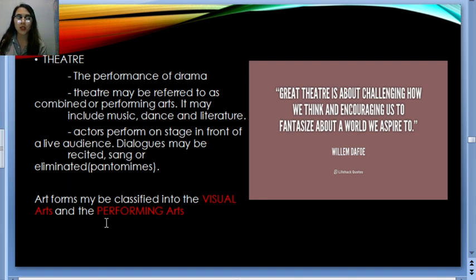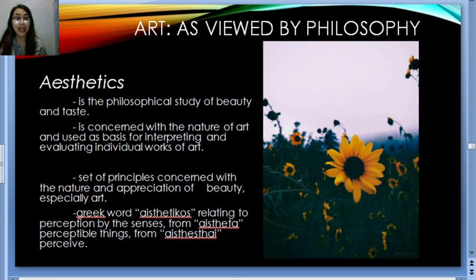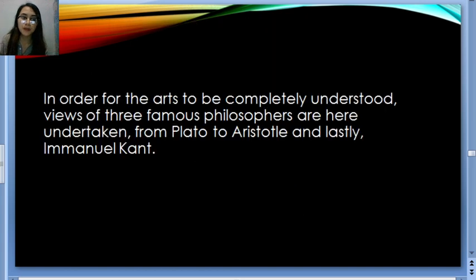Art forms may be classified as visual art and performing arts. It's not just visual art like drawing and painting — there are also performing arts like theater, dance, and music. Art as viewed by philosophy involves the field of aesthetics: the philosophical study of beauty and taste. It is concerned with the nature of art and used as a basis for interpreting and evaluating individual works of art. The term comes from the Greek word 'aesthetikos,' relating to perception by the senses.